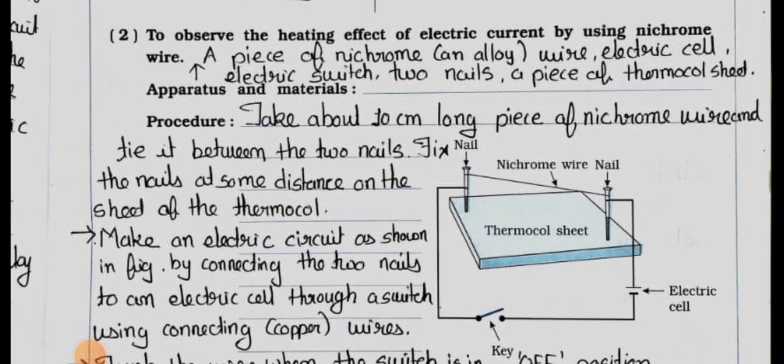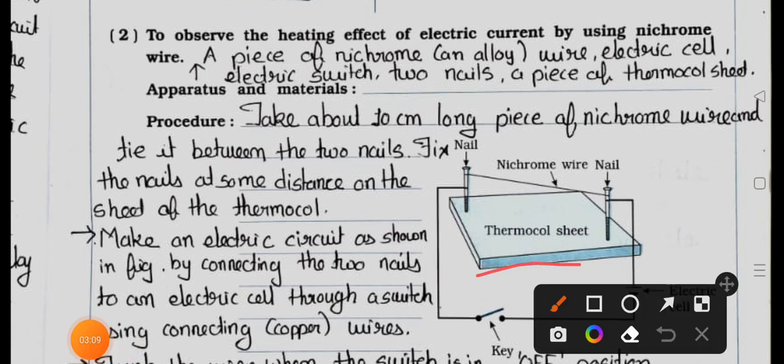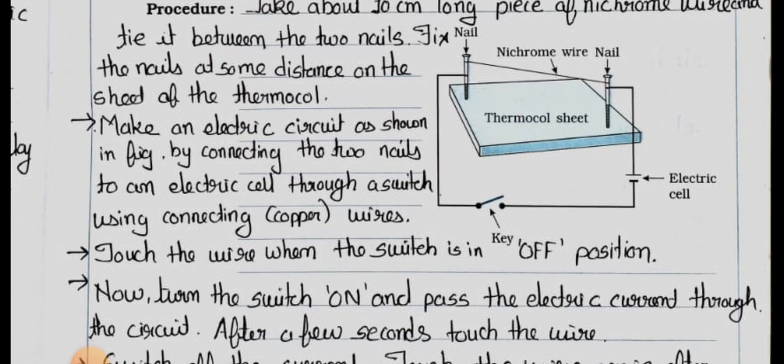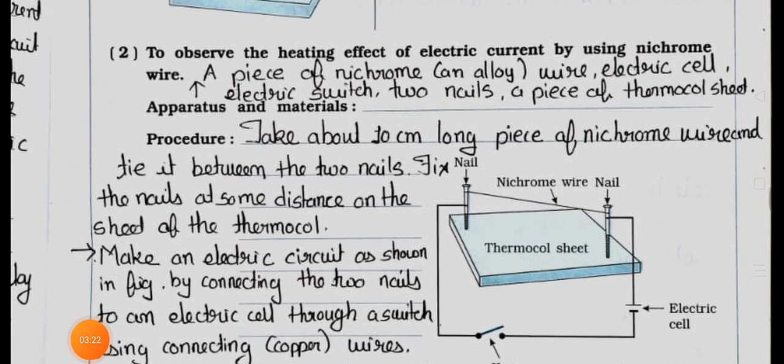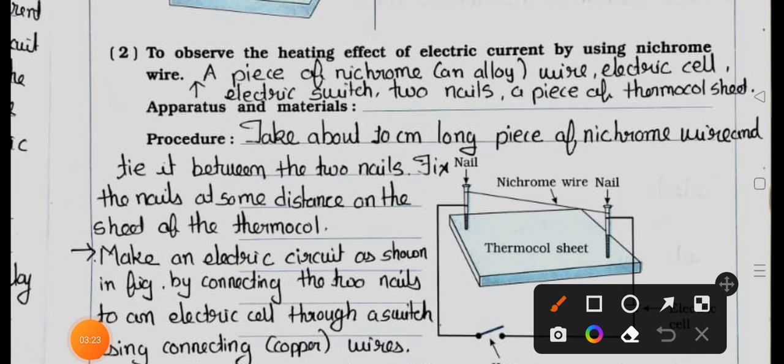Activity 2: To observe the heating effect of electric current by using nichrome wire. See here it's the thermocol sheet, here wire used is the nichrome wire, and here is the nail, and here this is the electric cell is connected, and here is the key.